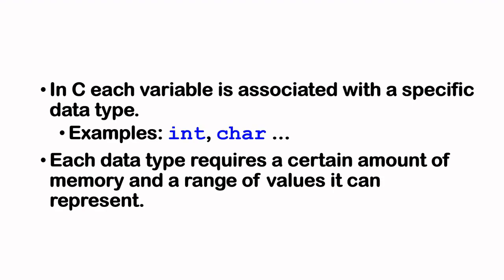Before we get on to arrays, let's take a look at data types. Within C, each variable is associated with a specific data type. Examples of data types include int for integer and char for character. Each data type, whether it's an int or a char, requires a certain amount of memory or storage space, and it has a range of values it can represent.